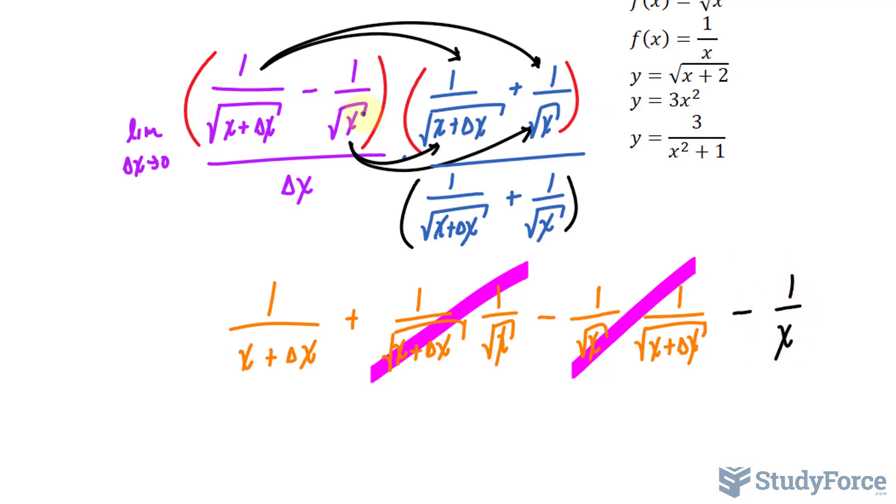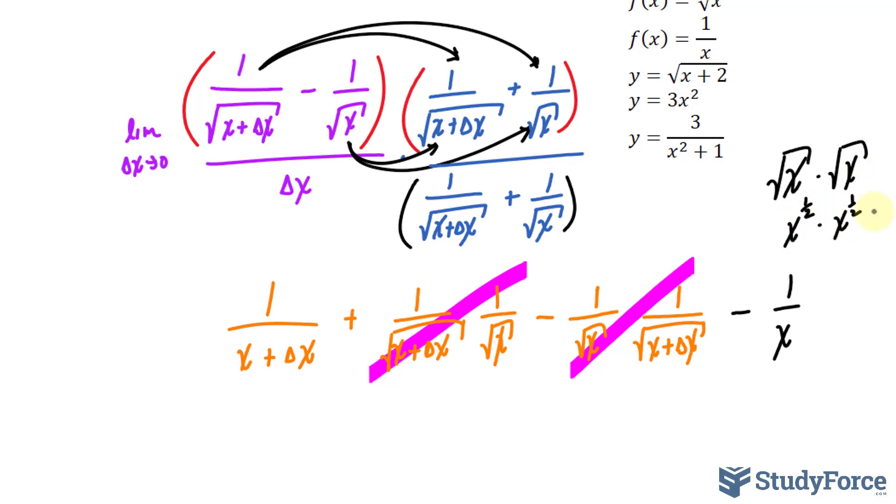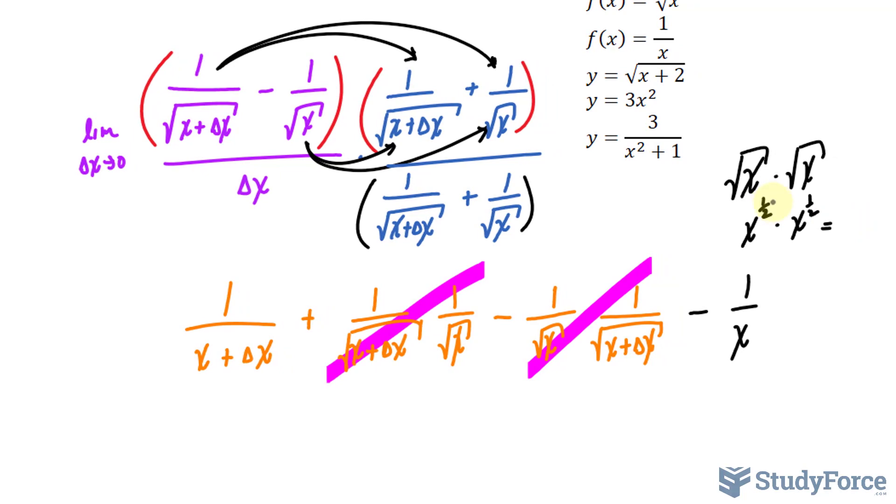In case you're confused as to why that loses its square root, just think of it this way. The square root of x times the square root of x is the same thing as x to the power of half times x to the power of half. The exponent laws say that when you multiply with the same base, you add the exponents. So half plus half is 1, x to the power of 1. That's why.